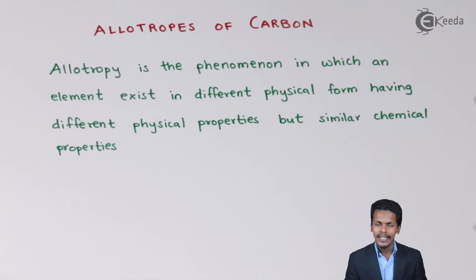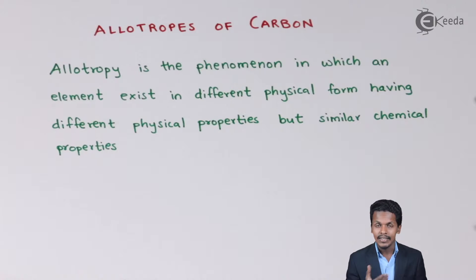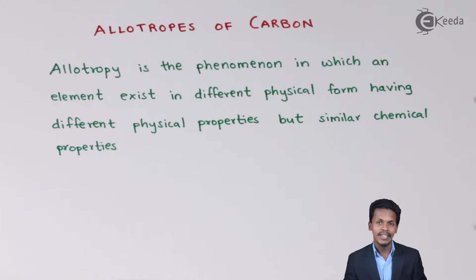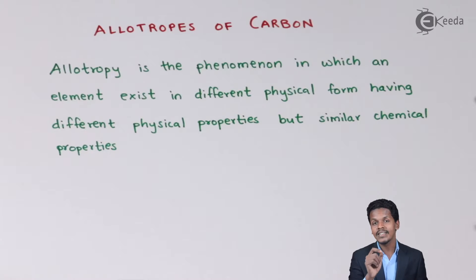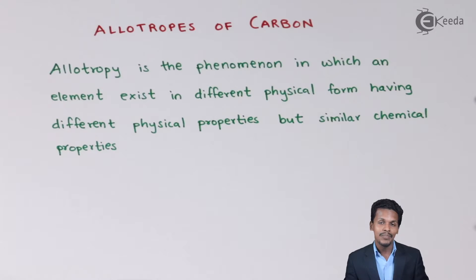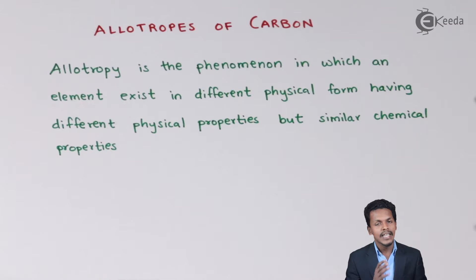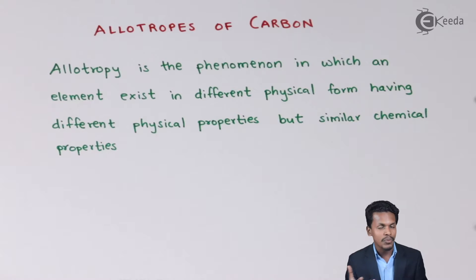The allotropes of carbon are basically divided into three parts: diamond, graphite, and fullerene. All of these substances consist of carbon as the only component. Carbon has a tendency to form catenation, and all these allotropes are products of catenation. Since they are all made up of the same carbon atoms, they are allotropes of each other, yet they have different physical properties.